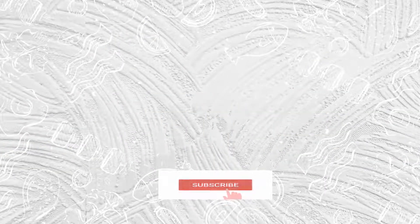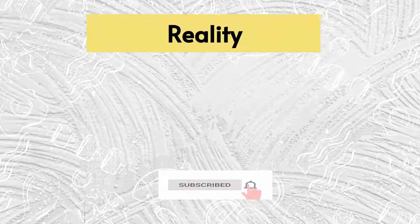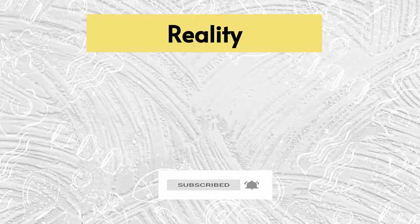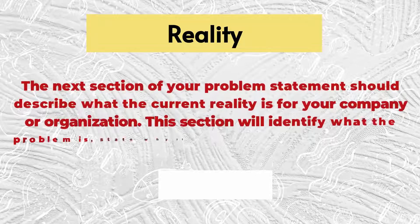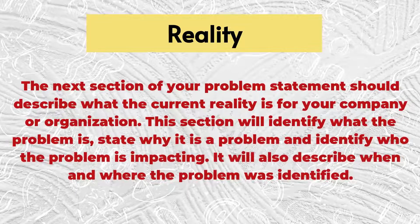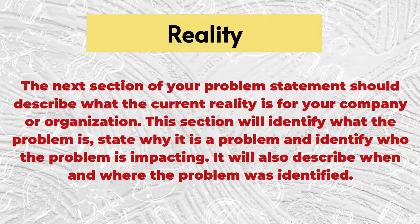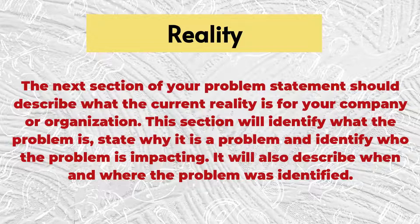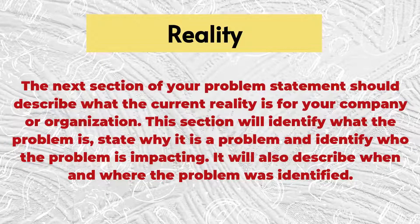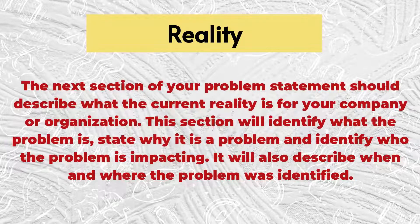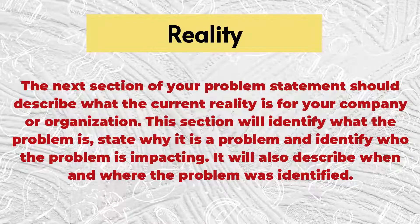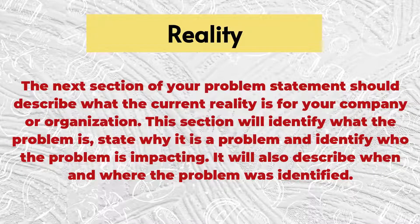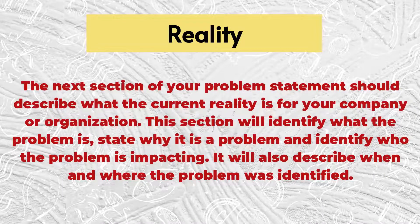2. Reality. The next section of your problem statement should describe what the current reality is for your research. This section will identify what the problem is, state why it is a problem, and identify who the problem is impacting. It will also describe when and where the problem was identified.